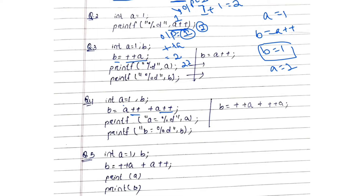Here both are post-increment operators. First we assign: a is 1, so 1 is assigned. Due to increment, a becomes 2, which goes into the next term and is assigned as 2. Then a is increased by 1 to become 3. So b = 1 + 2 = 3, b equals 3, a equals 3.